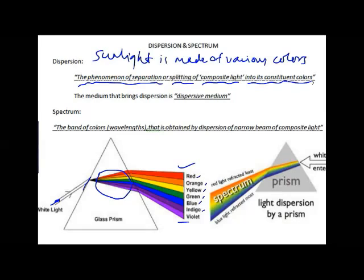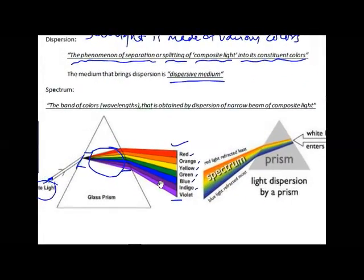The phenomenon of separation or splitting up of composite light into its constituent colors is called dispersion. Sunlight, also called white light, splits into its constituent colors — colors it already contained. The medium that brings about dispersion is called a dispersive medium. Vacuum or air do not cause dispersion, so they are not dispersive media, whereas water and glass are examples of dispersive media.